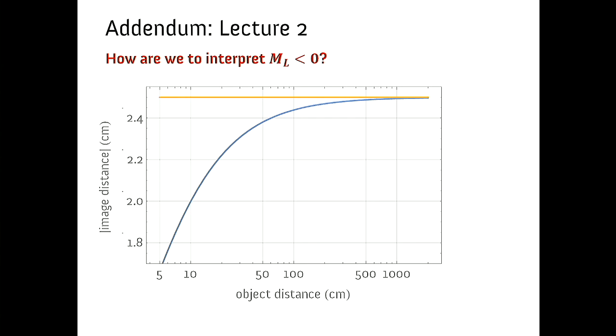This becomes much easier to interpret if we just look at the distance, forget the sign convention, and think about whether the image is getting further away. There's actually a nice visualization here of why depth perception is important and why objects are closer than they appear. You can see that after about 50 centimeters everything is bunched up. The images of everything is bunched up at approximately the focal length, nearly 2.5 centimeters.